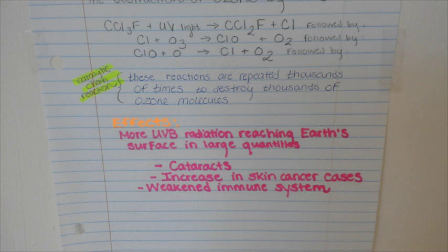So why is this a bad thing? Well, the effects of the ozone hole is that more UVB radiation reaches our surface in large quantities, and this causes an increase in cataracts, which is the clouding of the lens, an increase in skin cancer such as basal cell carcinoma, squamous cell carcinoma, and melanoma, and it also weakens our immune systems so we're less able to fend off disease and infection.